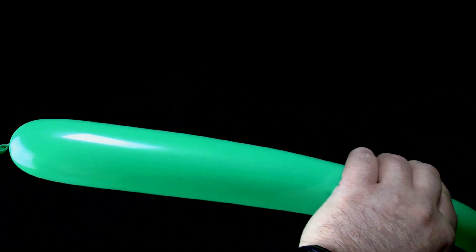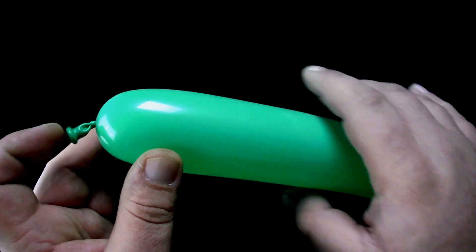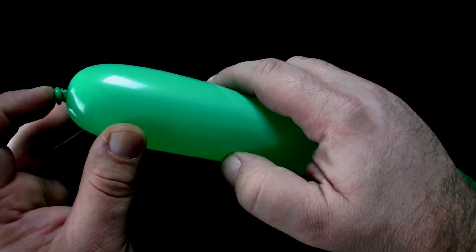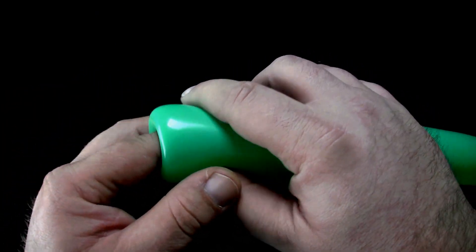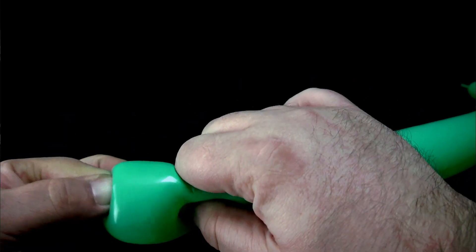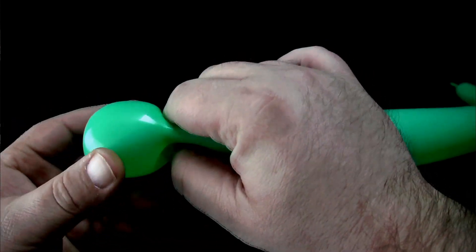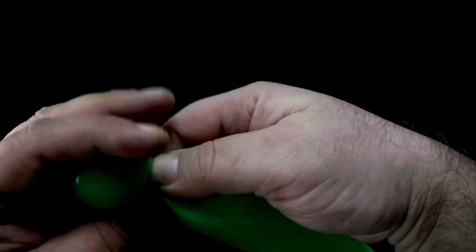Start with the balloon you will use for the stem. Begin twisting your design at the nozzle end of the balloon. Make a tulip twist. Push the nozzle into the balloon with your index finger. Pinch down on the balloon with your other hand making sure to pinch down on the knot on the balloon's nozzle. Carefully withdraw your finger from the balloon and twist.